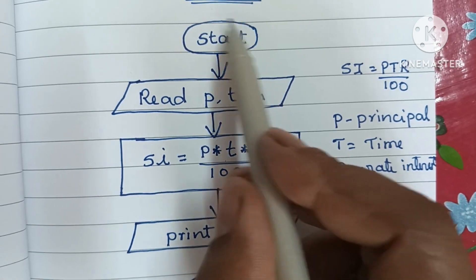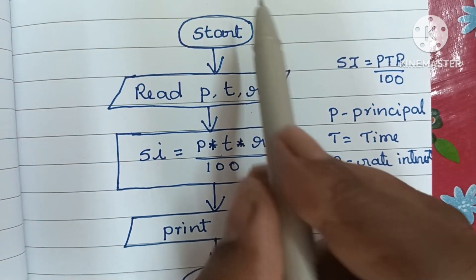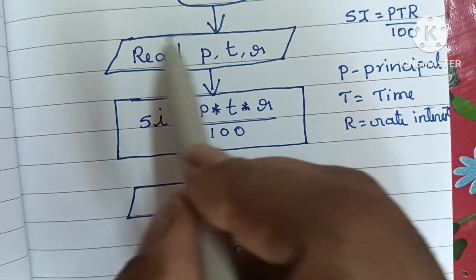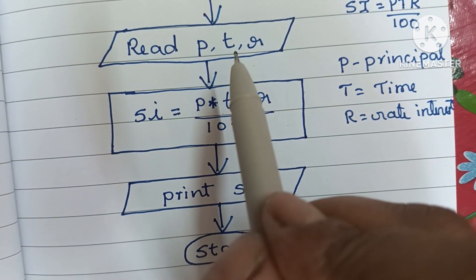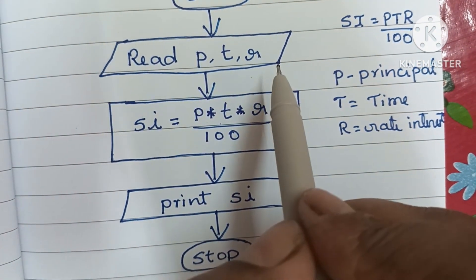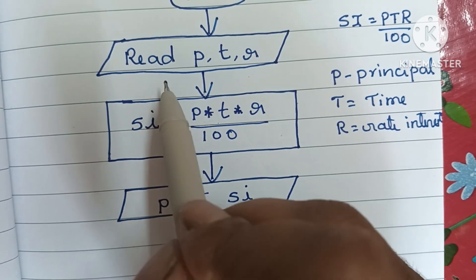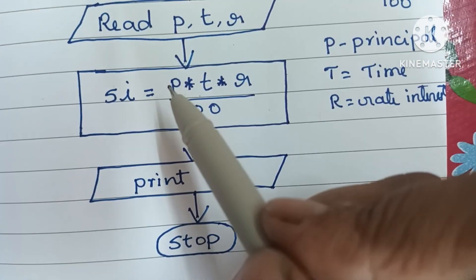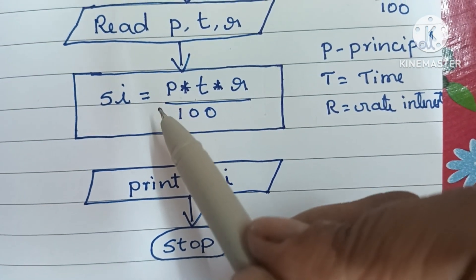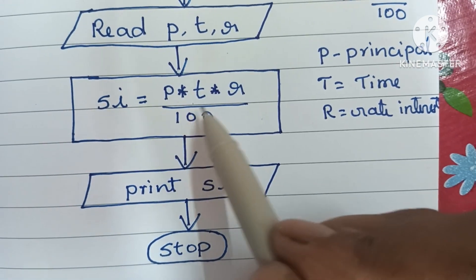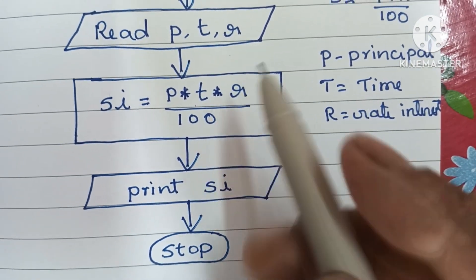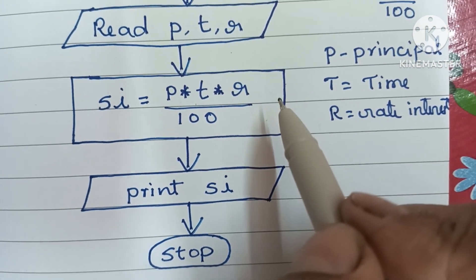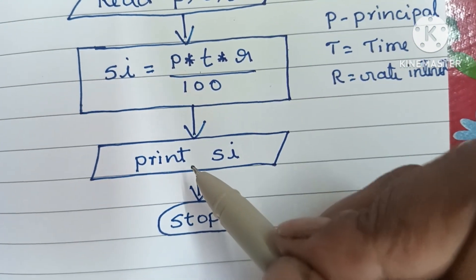So to summarize: the flowchart starts with a start statement written within an oval shape. Next, we read the input values — P, T, and R (principal, time, and rate of interest) — written within a parallelogram shape. Then we calculate simple interest using the formula SI = P × T × R divided by 100, which is written within a rectangular shape.